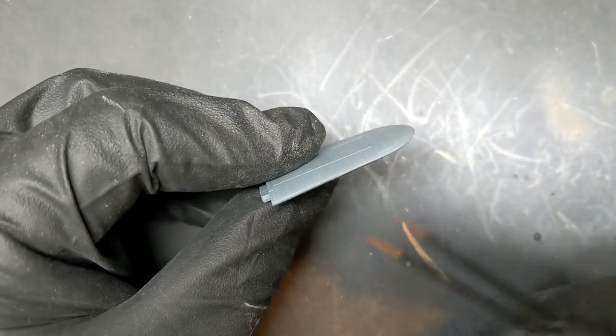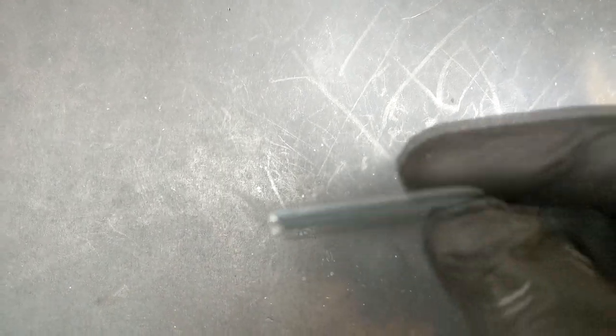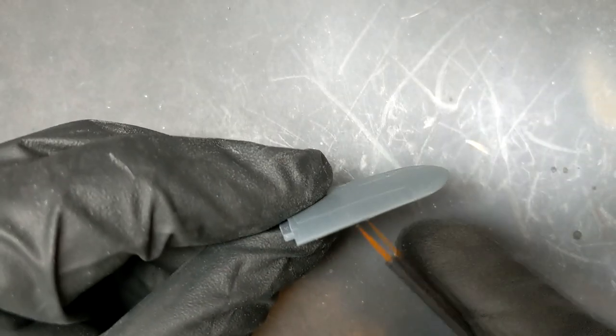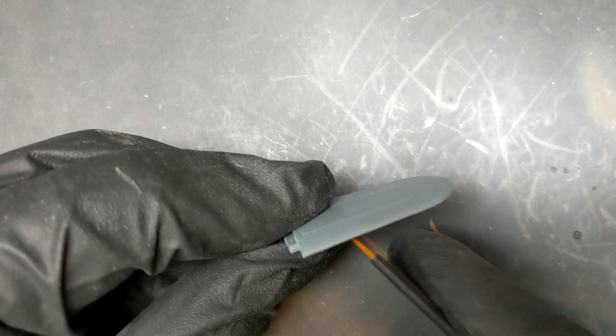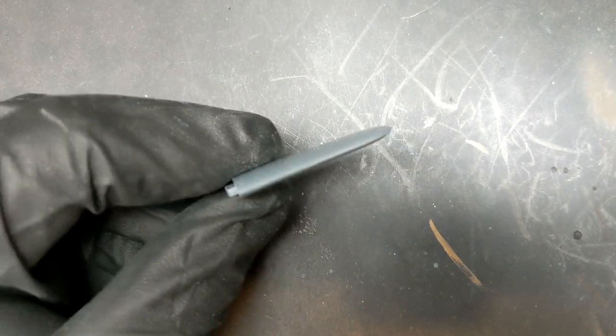One of the last things I have to do before we start getting ready for paint is get the horizontal stabilizers cleaned up. There's a little bit of a gap along here. And all I'm going to do is fill that in with some sprue goo.